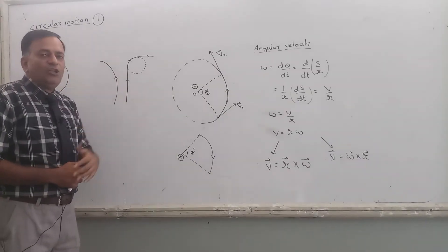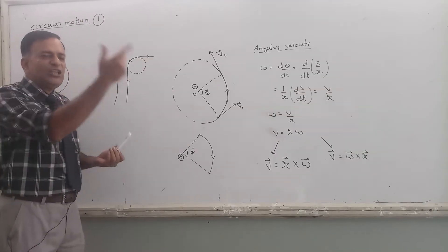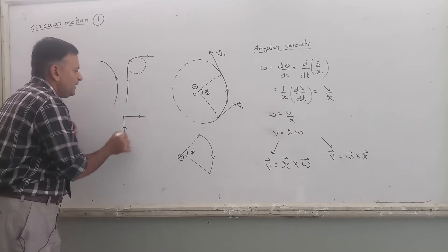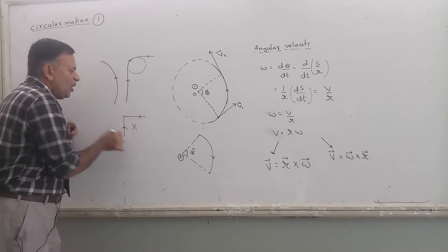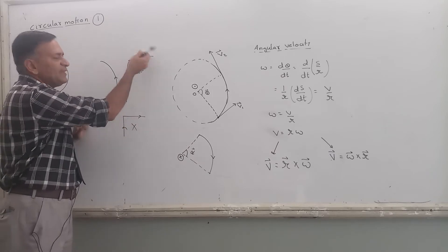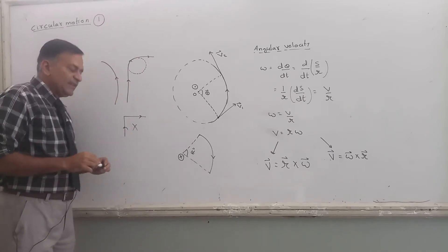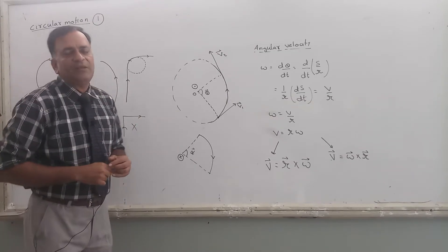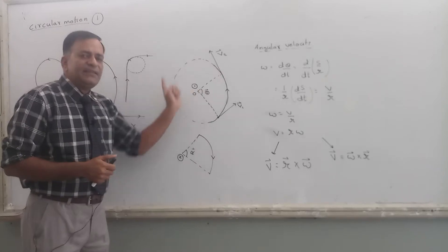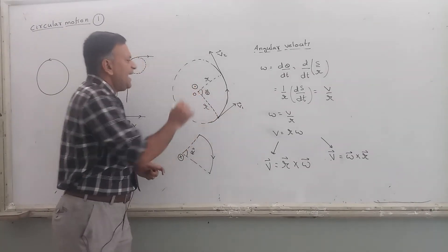For example, when you are taking a 90-degree turn on the road, you cannot take a very sharp turn. Your turn has to be gradual. At that part when you are taking the turn, you will be in circular motion. I have traced this circle — the radius of this circle is r and O is the center.